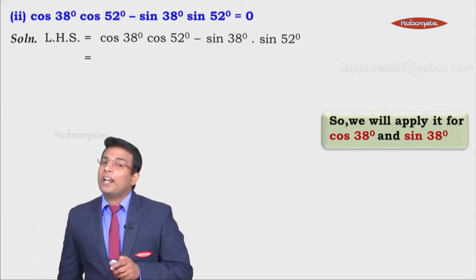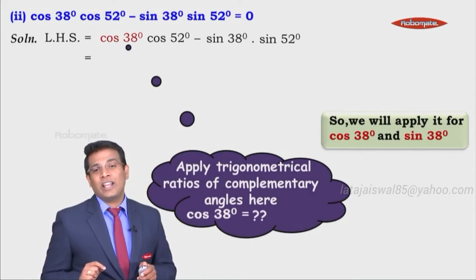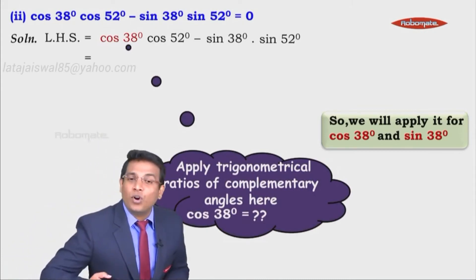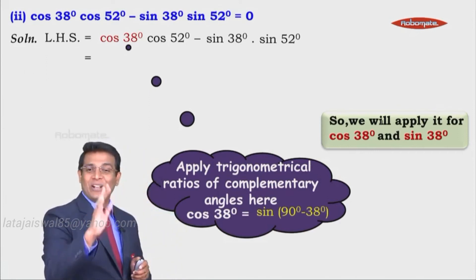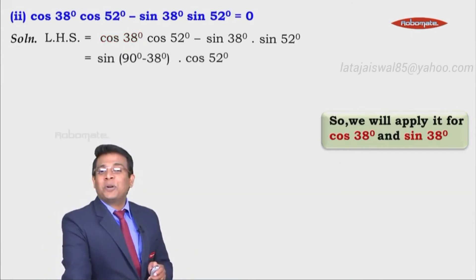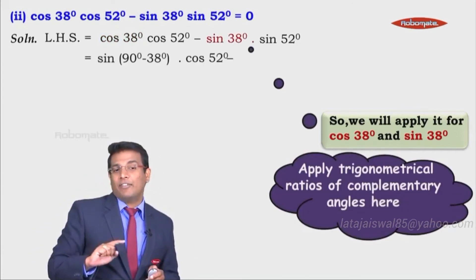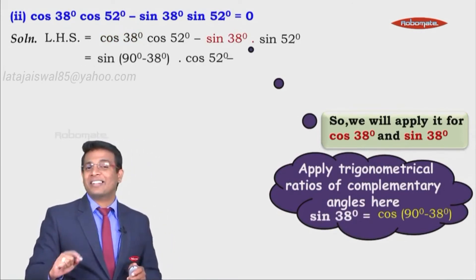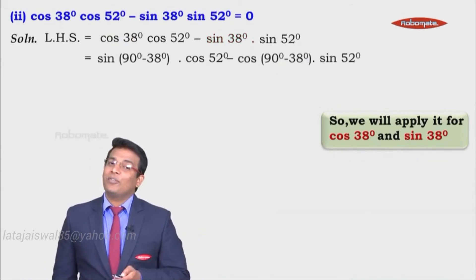First we apply it for cos of 38. We know cos theta is equal to sin(90 minus theta). That means cos 38 degrees is equal to sin of (90 minus 38) degrees — we write that there. The next term, cos of 52, remains as it is. Minus sin of 38 degrees: we apply sin theta equals cos(90 minus theta), so sin 38 becomes cos of (90 minus 38), and sin of 52 remains as it is.